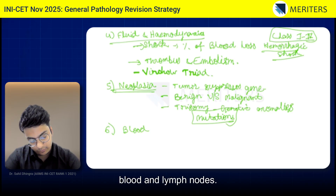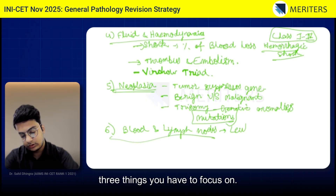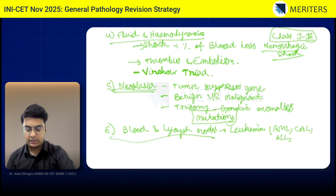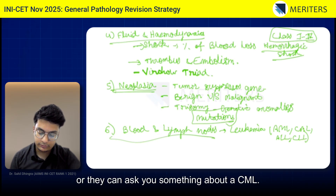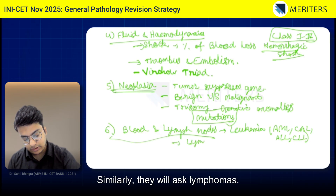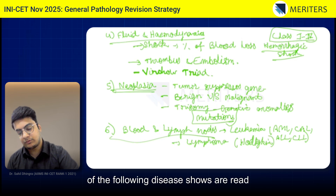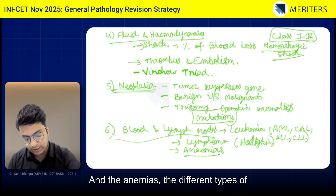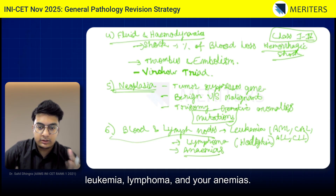Next is Diseases of Blood and Lymph Nodes — again, very important, but you only have to focus on three things. First are leukemias: know all four types — AML, CML, ALL, and CLL. For example, they may ask which is exclusively found in children, or ask about a typical histological feature of CML. Similarly, they will ask about lymphomas — both Hodgkin's and non-Hodgkin's — for example, which disease shows Reed-Sternberg cells. And the different types of anemias. So from blood and lymph nodes, read leukemias, lymphomas, and anemias in detail.